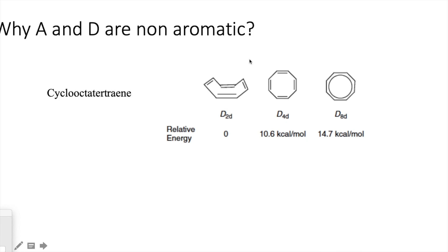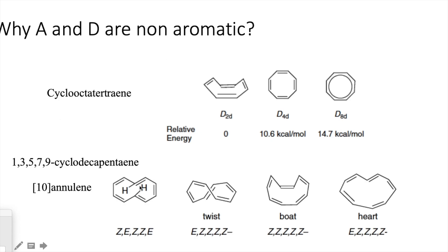Cyclooctatetraene (molecule C) remains more stable in its tub form — conjugation is lost, the molecule is no longer planar, and it becomes non-aromatic. For [10]annulene, this looks aromatic, but there are flagpole hydrogens that are very close to each other. These hydrogens repel each other, and twisted or boat forms are more stable than the planar form. Planarity is lost, and this molecule no longer remains aromatic.